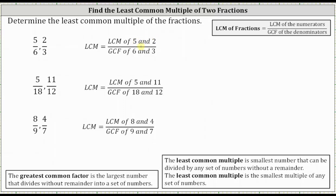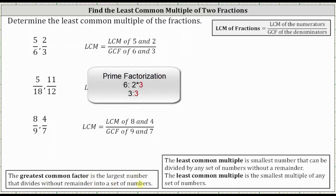I do have other videos that show how to determine the greatest common factor and the least common multiple, but for review: the greatest common factor is the largest number that divides without remainder into a set of numbers. So the greatest common factor of six and three is the largest number that divides both six and three without remainder, which is three.